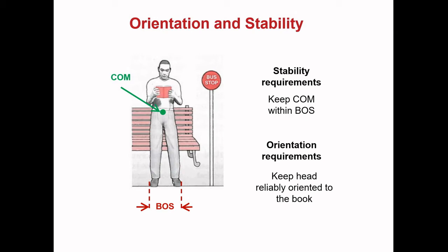Here we see a person standing at a bus stop reading a book. They are standing comfortably with their feet shoulder-width apart, creating a good base of support. This person's centre of mass is located approximately at the position of the green dot. If we draw a vertical line from the centre of mass down to the ground, that line falls inside of the base of support. This means that the stability requirements of the task — keeping the centre of mass within the base of support — are currently being satisfied.